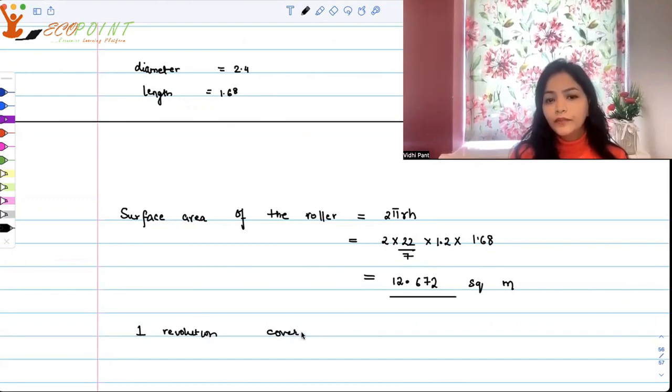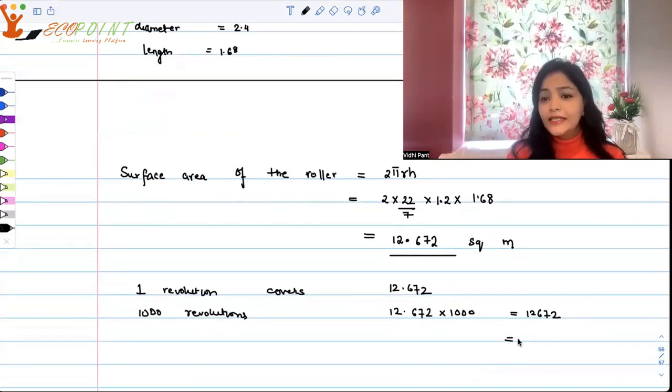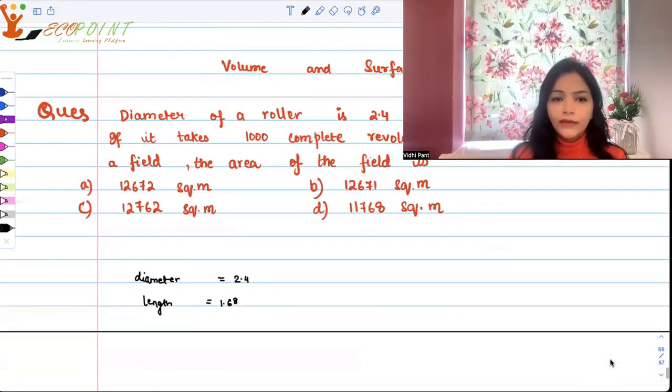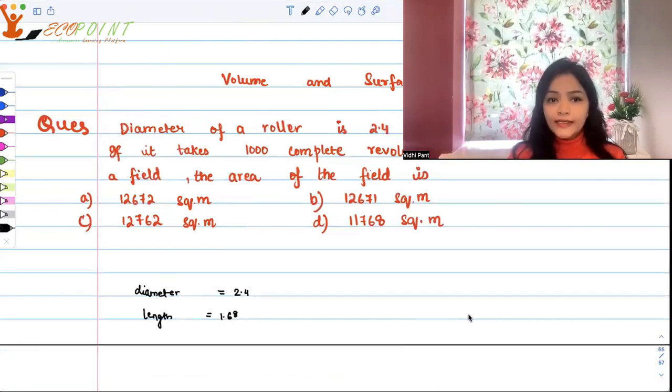One revolution covers 12.672 square meters, so 1000 revolutions will cover 12.672 times 1000, which gives you 12,672. If with 1000 revolutions we are able to cover the entire field, that means this is the area of the field. The correct answer is 12,672 square meters, option A.